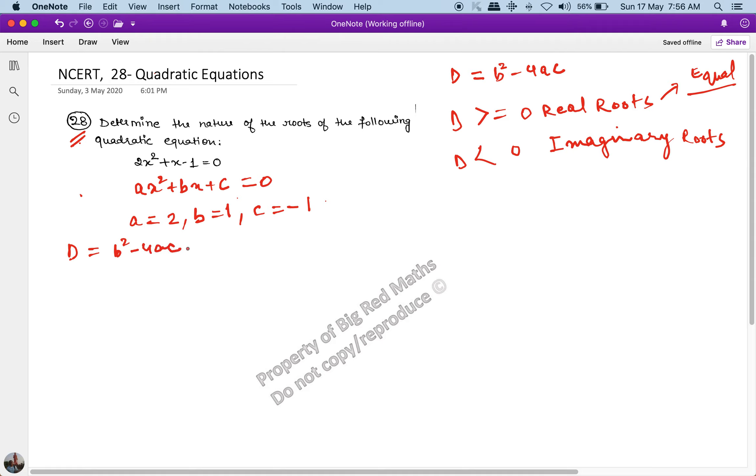b squared minus 4ac becomes 1 minus 4 times 2 times minus 1, which equals 1 plus 8, which is equal to 9. So the discriminant D equals 9, and this discriminant D is greater than 0, so it has real roots.